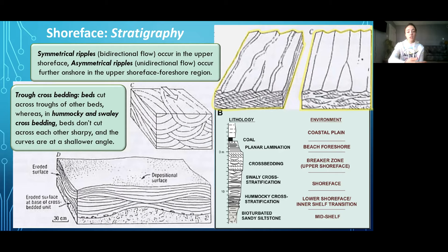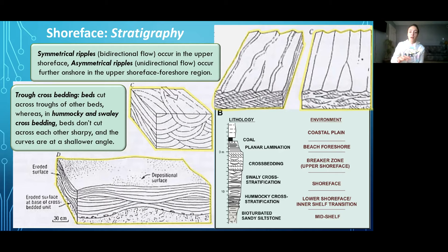Moving on to trough cross-bedding and hummocky and swaley cross-bedding: trough cross-bedding has beds that cut across troughs of other beds, and there's a big difference in cross-section compared to the much lower-angle curves of hummocky and swaley cross-bedding. In hummocky and swaley cross-bedding, beds do not cut across each other sharply and the curves are at a much shallower angle. You can think of it as the high-energy trough cross-bedded zones grading down into calmer hummocky and swaley cross-bedding, and then into planar bedding in the offshore where wave orbitals are no longer reaching.